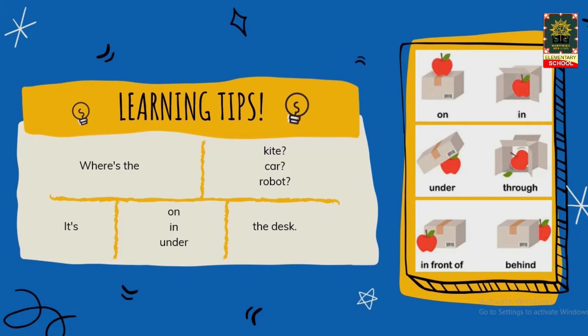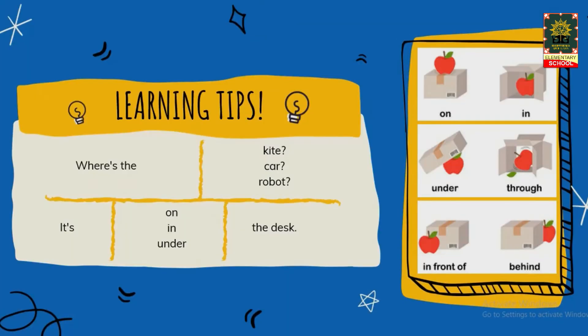Kita lihat lagi gambar di sebelah kanan. Pada tulisan 'on', disitu ada gambar apel di atas kardus. Artinya, on sama dengan di atas. Lalu ada tulisan 'in' — disitu terdapat gambar apel di dalam kardus. Artinya, in sama dengan di dalam.